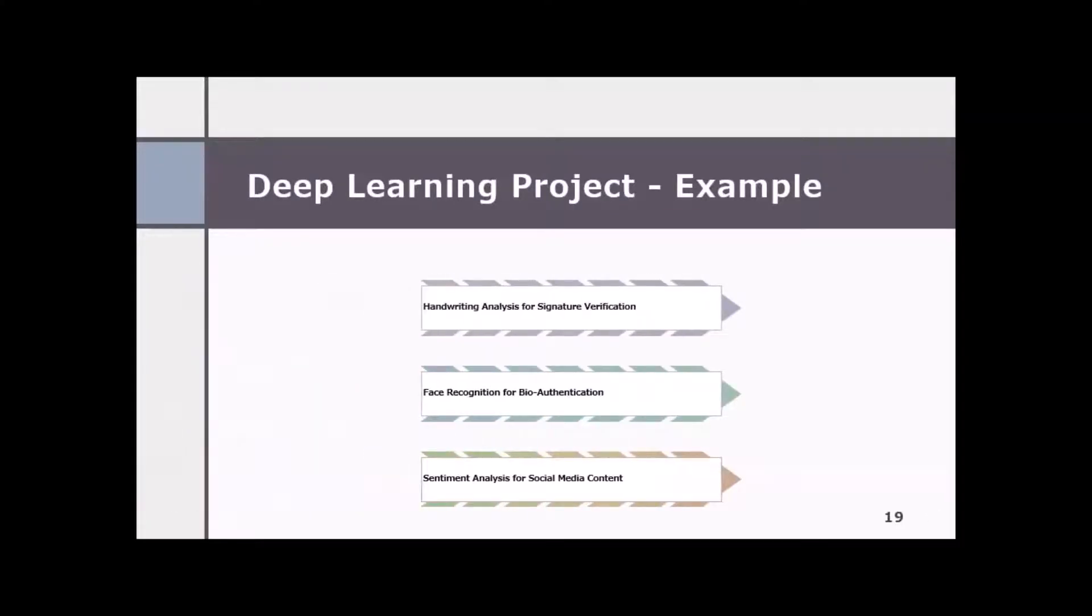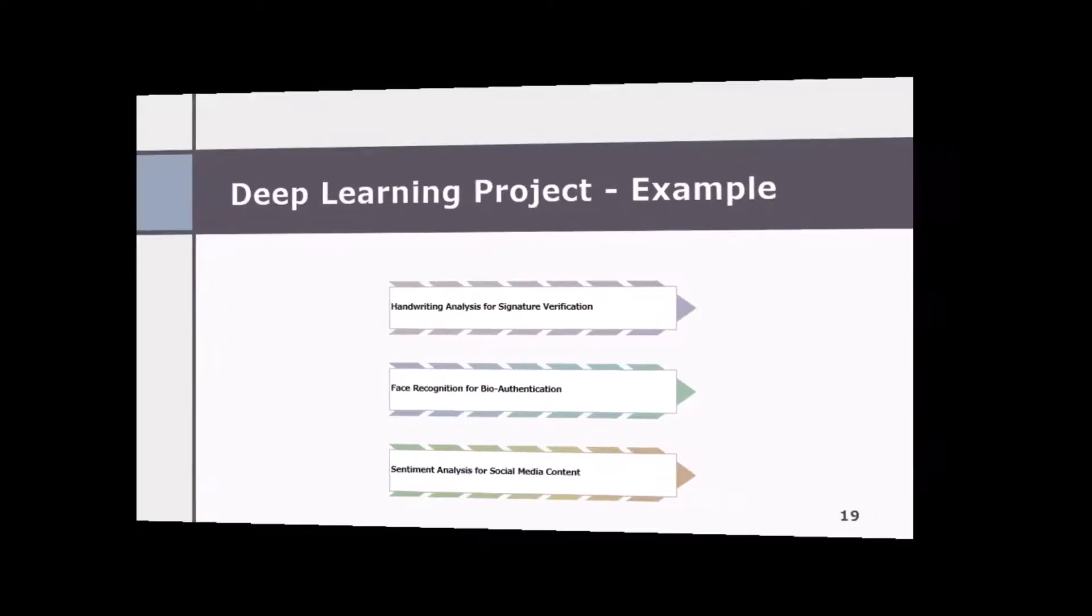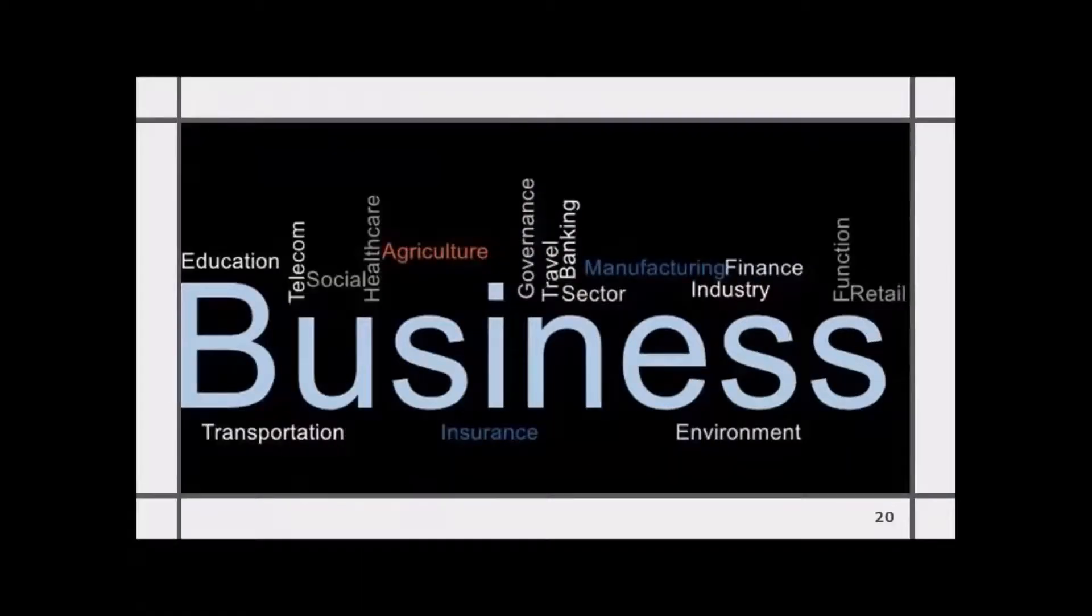Let's look at a few examples for deep learning project type. Project to do handwriting analysis for signature verification, project for face recognition for bio-authentication, or project to do sentiment analysis for social media content. An overall AI project type can vary based on business domain and business function, as each respective business sector has different objectives and goals. So whether it's education, agriculture, environment, social, manufacturing, retail, insurance, each sector, each industry, or each business function has different requirements and different needs.